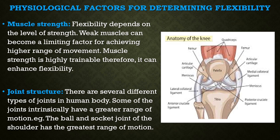Next is joint structure. There are various types of joints in the human body. Some joints intrinsically have a greater range of motion than others. For example, the ball and socket joint of the shoulder has the greatest range of motion in comparison to the knee joint.